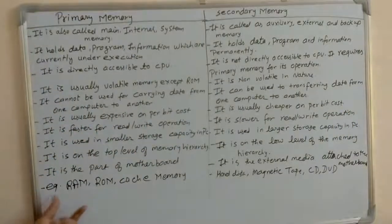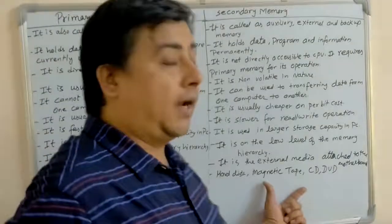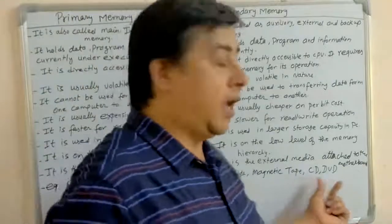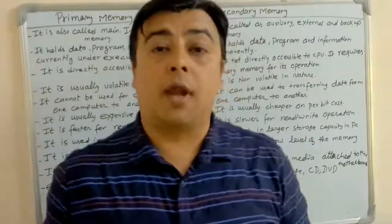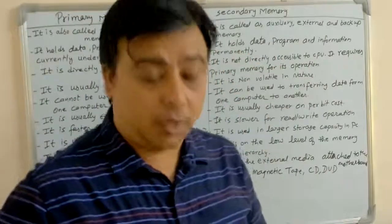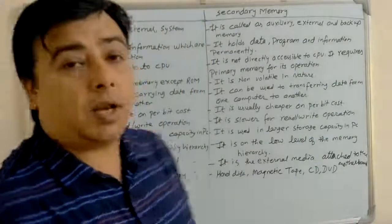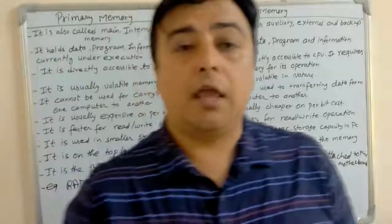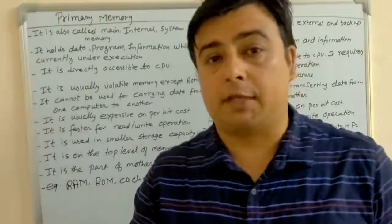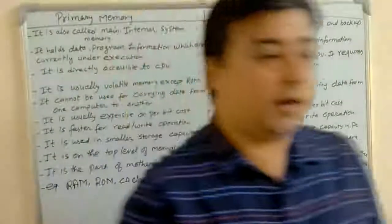Examples of primary memory are RAM, ROM, and cache memory. Examples of secondary memory are hard disk, magnetic tape, floppy disk, pen drive, CD, DVD, and Blu-ray disk. This is the difference between primary memory and secondary memory. If you have not subscribed to my channel, do not forget to subscribe to get updated videos — thanks for watching.